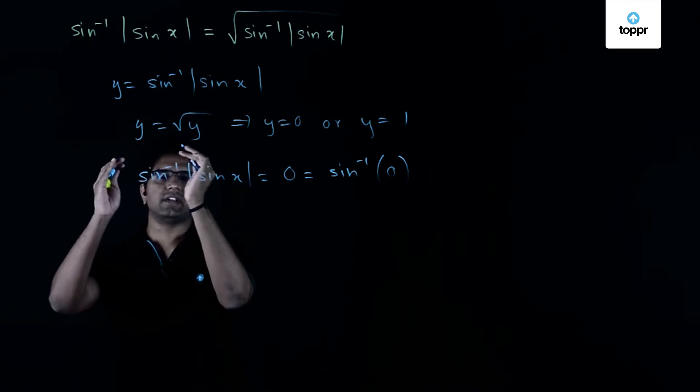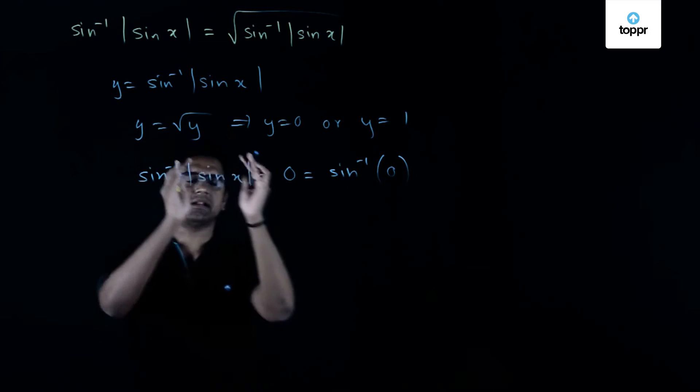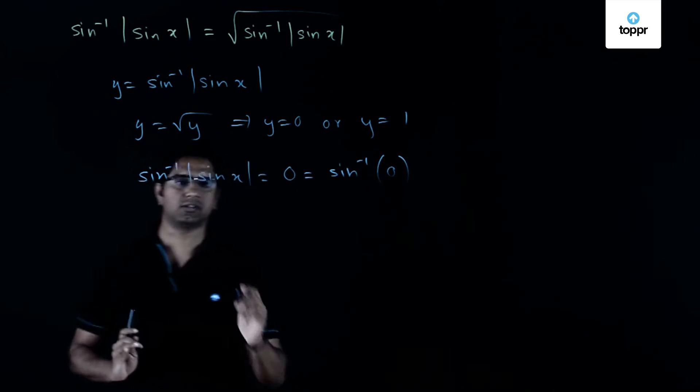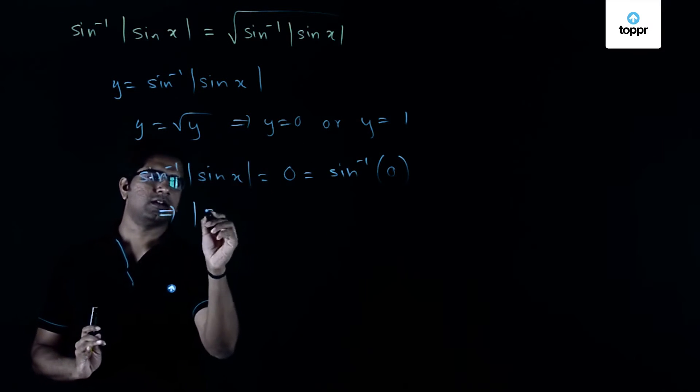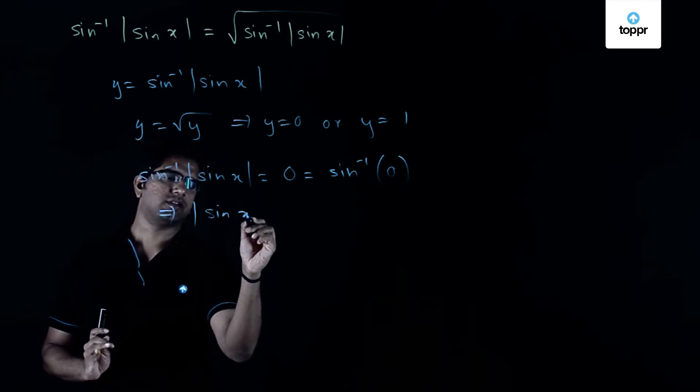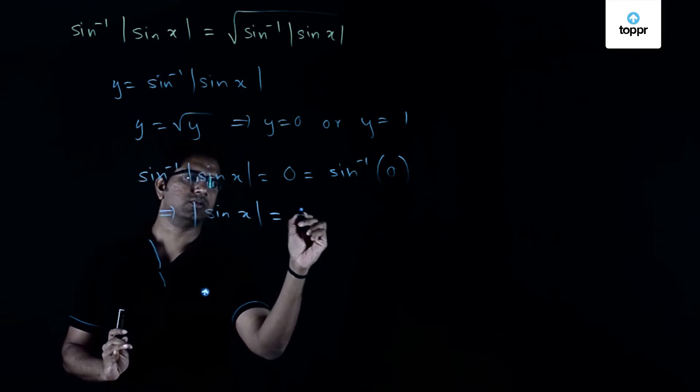When we have sine inverse of this equal to sine inverse of another, we can basically equate these two terms. So which implies that the magnitude of sine x is equal to 0.